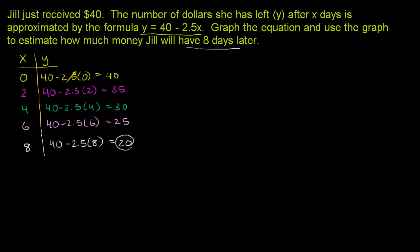But let's do the first part. Let's actually graph the equation, see it visually. So let me draw some axes here. This will be a hand-drawn graph. Let's make that our y-axis, or in this case, the number of dollars she has. And this is my x-axis. We only need to focus on the first quadrant because we're assuming she won't have a negative number of dollars, so y-values will be positive. And we assume the days are only going to be positive.